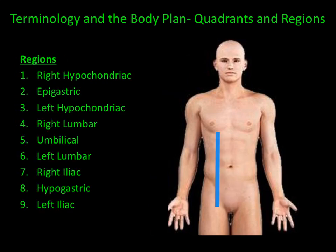The body can also be divided into nine regions, kind of like a tic-tac-toe board. The first region is the right hypochondriac region. The prefix hypo means below, and chondra refers to cartilage or the ribs.